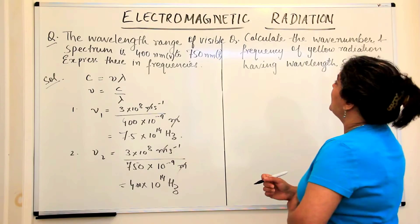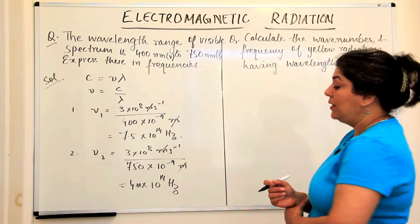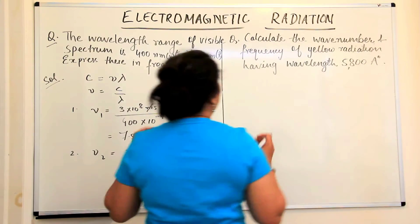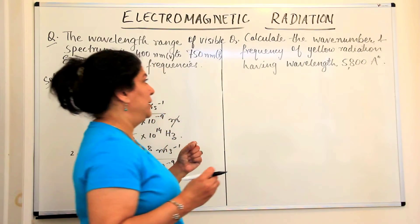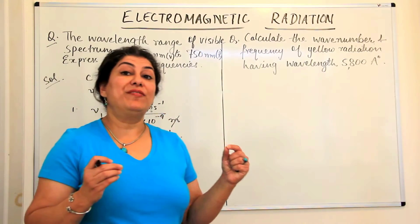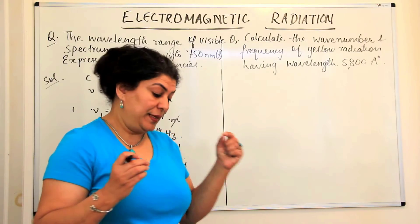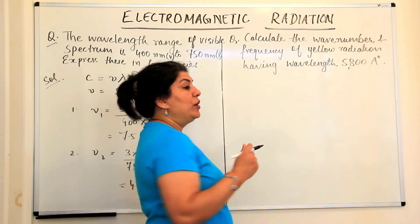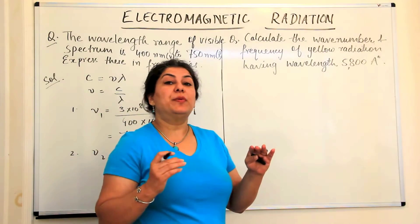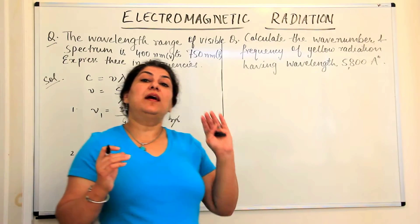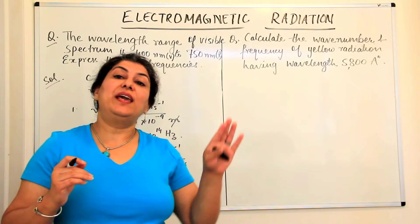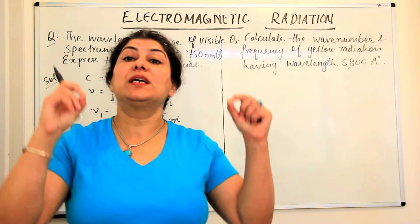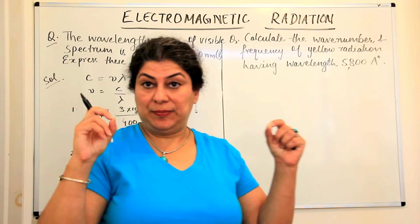Let us now come to the next problem. You have to calculate the wave number. Wave number is the number of waves that are present in a unit length.